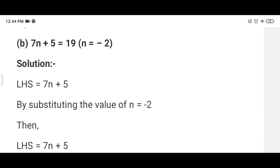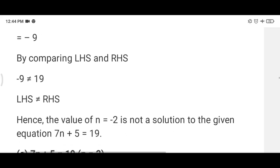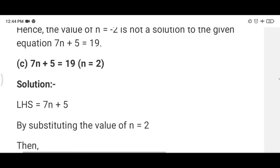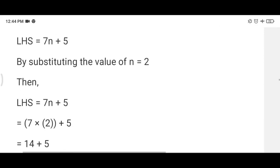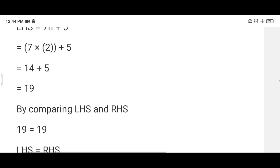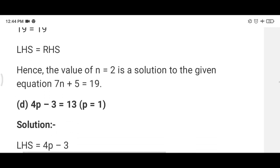Second question, B part 7m plus 5 is equal to 19. When we put m equals minus 2, 7 into minus 2 is minus 14 plus 5, it is minus 9, so here it is not the solution. C part we put n equal 2. When we put n is equal to 2, 7 into 2 is equal to 14, 14 plus 5 is 19. And 19 is also on the RHS. That's why 19 is equal to 19. So here we will write yes, n is equal to 2 is the solution of the equation.